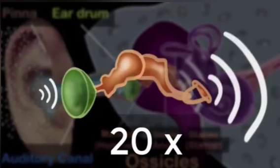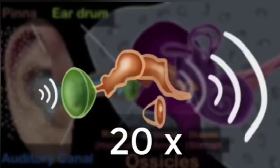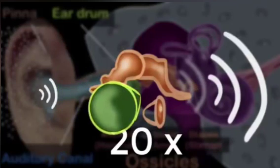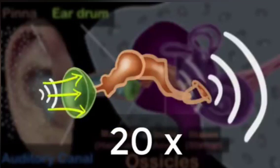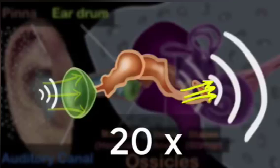But how do they do that? Just take a look at the base of the stapes — it has such a small area compared to that of the eardrum. So when the force gets transmitted from the eardrum to the stapes, it gets concentrated in a very tiny area. And when you concentrate force in a very tiny area, you increase its pressure.